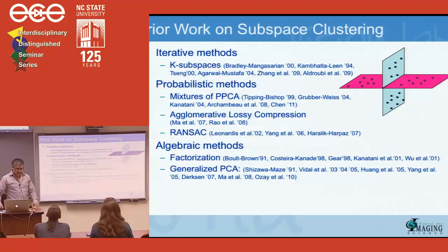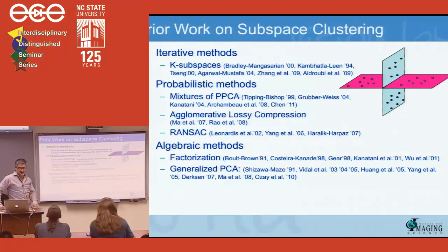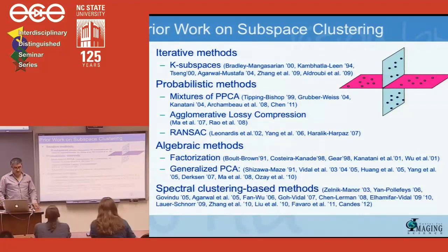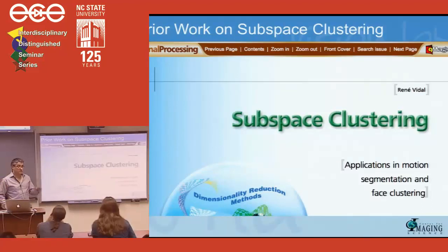The algebraic geometric approach I developed — called generalized PCA — was designed to solve this in closed form. We showed the problem can be solved in closed form for up to four subspaces, recovering their dimensions and number. But it doesn't work well with corrupted data. The family of methods that have really made a difference over the last five years are based on spectral clustering. The method I'm proposing belongs to this family. I published a tutorial in the Signal Processing Magazine last year that describes many of these methods in detail.